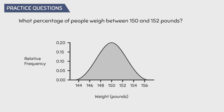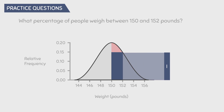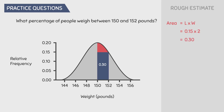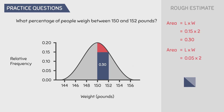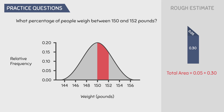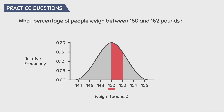However, if asked what percentage of people weigh between 150 and 152 pounds, then we have an entire area to account for. We know the area of a rectangle is length times width. We have a length of 0.15 and a width of 2, giving us 0.30. We still have the top triangular portion to account for — it is almost equal to half of a square with area 0.05 times 2 = 0.1, so half is 0.05. Therefore, the total area is roughly 0.05 + 0.30 = 0.35, meaning approximately 35% of people weigh between 150 and 152 pounds.